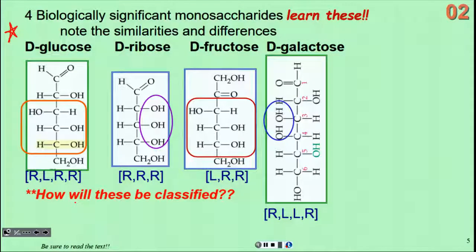What you're looking at to recognize them, at least from this representation, is the pattern of the OH groups as you go down the chain of carbons with the aldehyde or ketone group being shown at the top. The OH groups are going to be either left or right of this carbon chain, and the pattern for glucose is right, left, right, right.